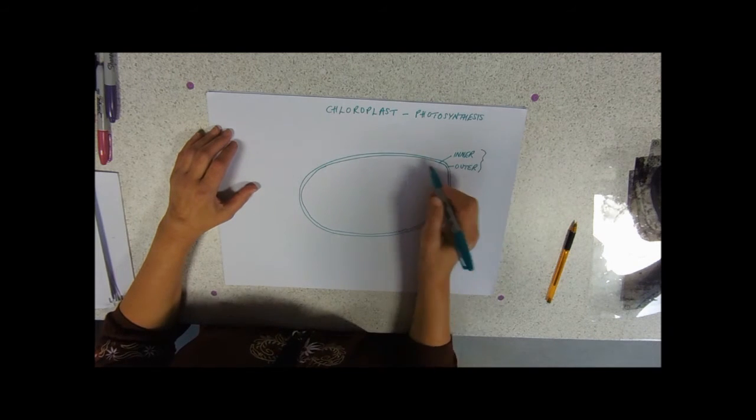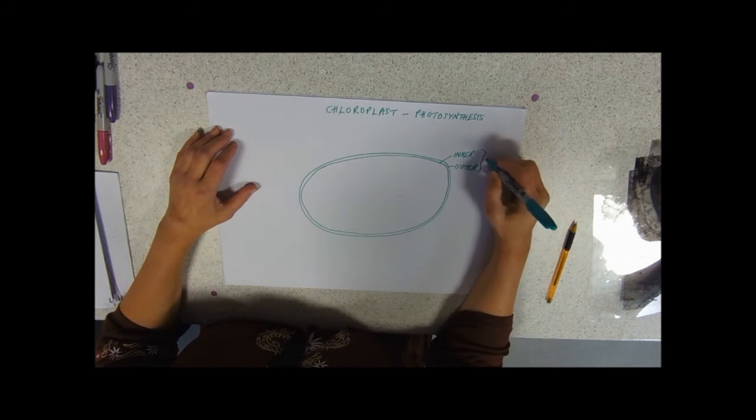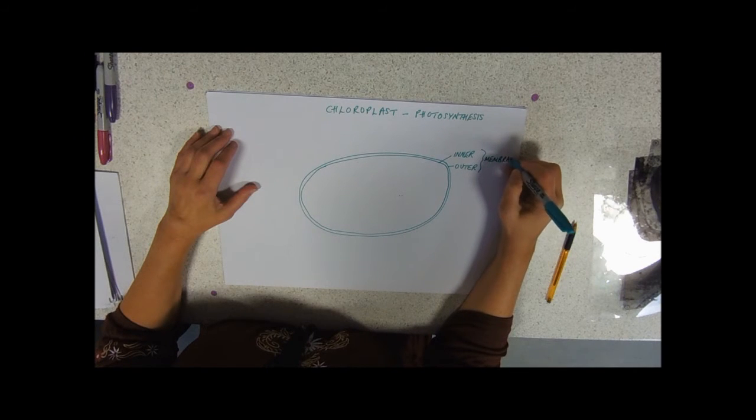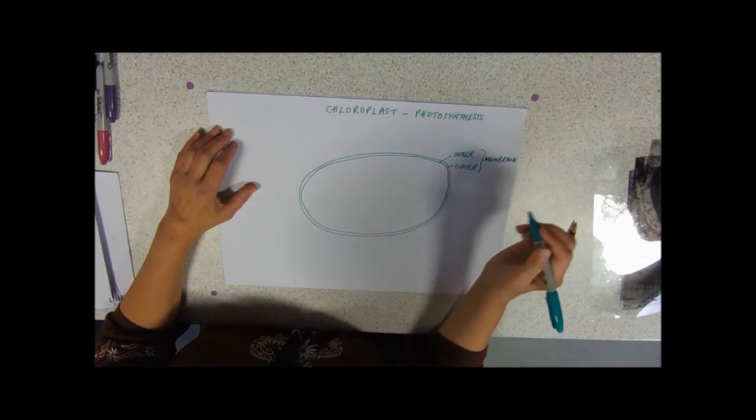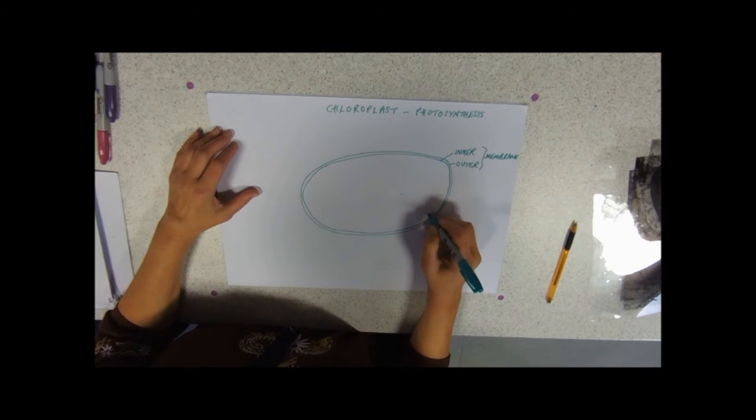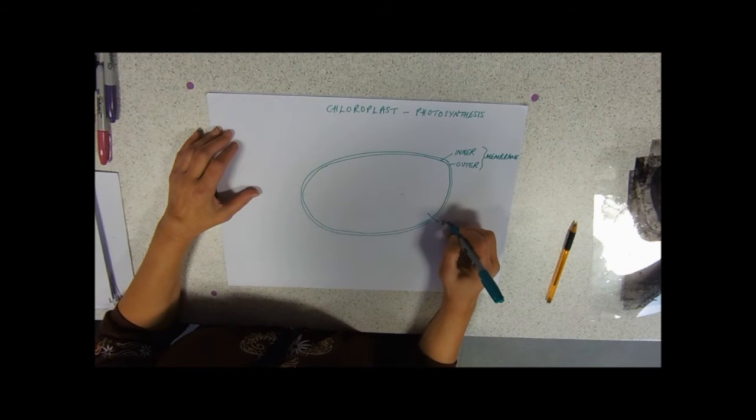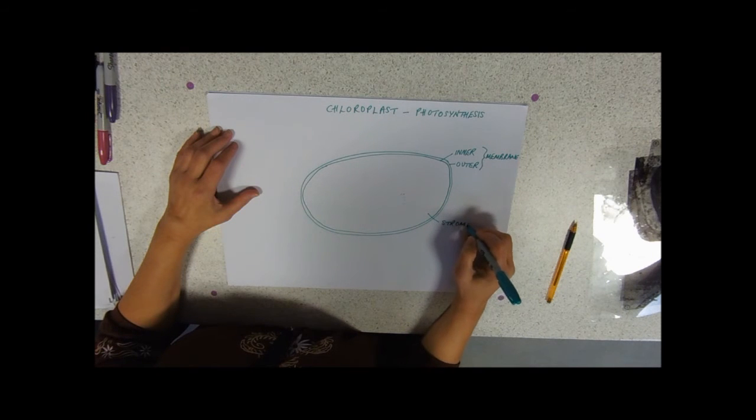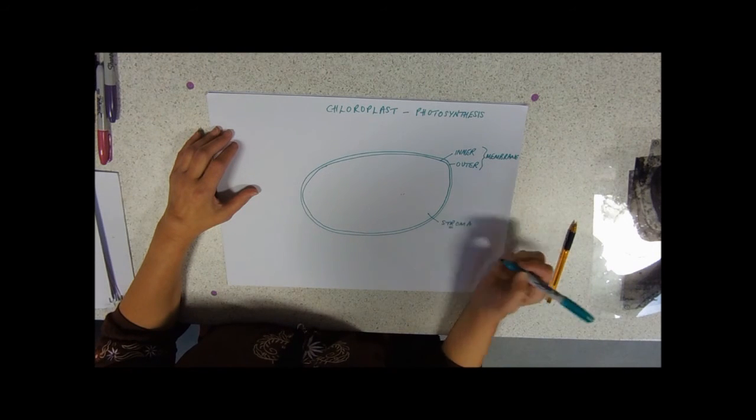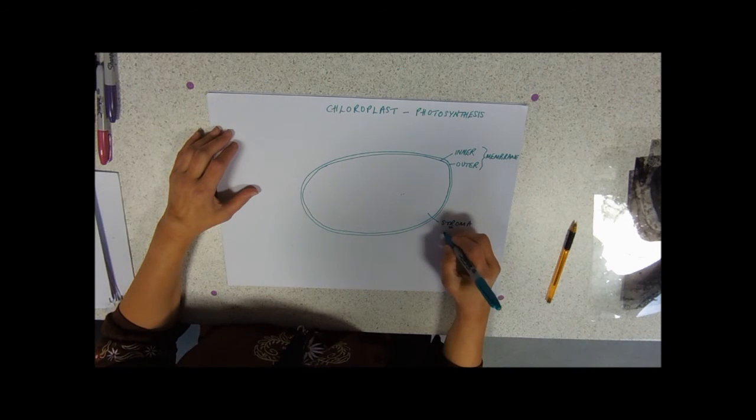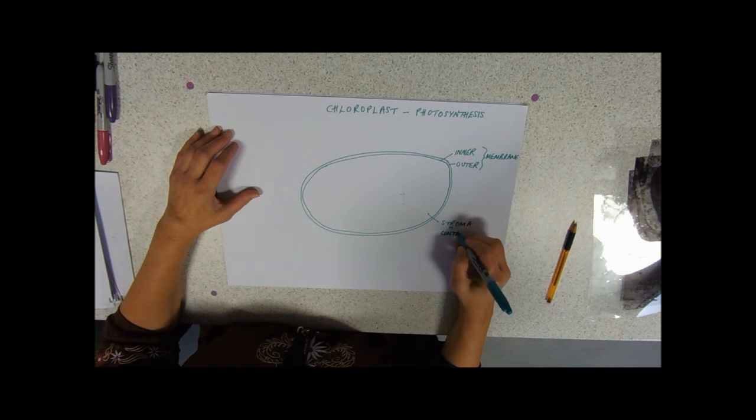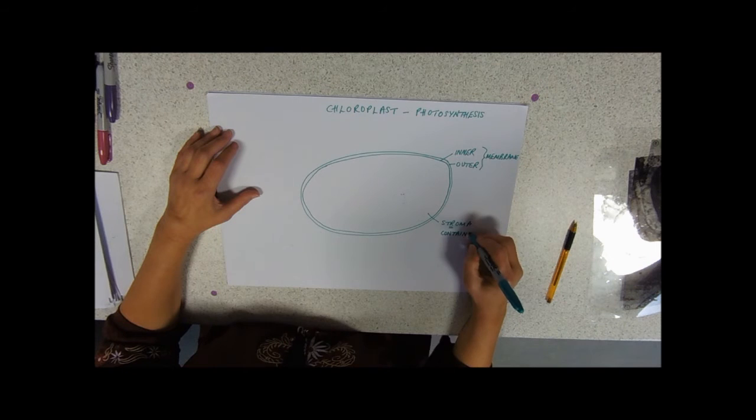Remembering that, if it's a structure, it's an organelle. And embedded in the background stroma, which again, just like in the mitochondrial matrix, don't forget to put the R in it, this is going to contain enzymes to do some of those photosynthetic reactions.